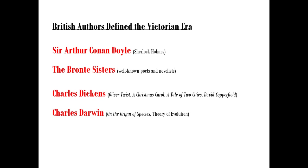Charles Dickens wrote a number of very famous novels — Oliver Twist, A Christmas Carol, A Tale of Two Cities, David Copperfield. And Charles Darwin wrote the very controversial On the Origin of Species, bringing the theory of evolution — very controversial, starting the science versus faith argument that still rages today. These authors define the Victorian era for Britain.